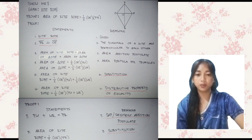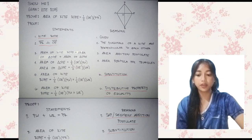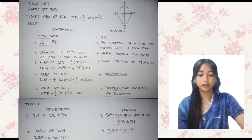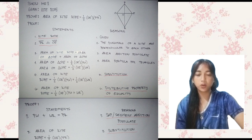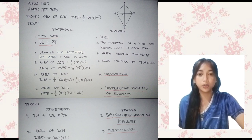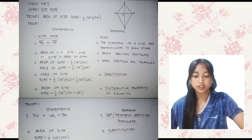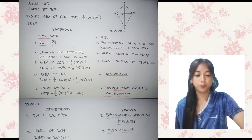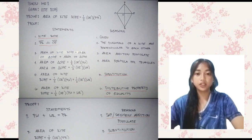Statement 3: Area of kite TROPE equals area of triangle OPE plus area of triangle ORE. Reason: Area Addition Postulate. Statement 4: Area of triangle OPE equals one-half times OE times PW, and area of triangle ORE equals one-half times OE times WR. Reason: Area formula for triangles. Statement 5: Area of kite TROPE equals one-half OE times PW plus one-half OE times WR. Reason: Substitution.